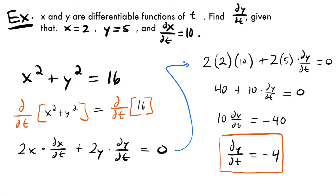That is the rate at which y is changing with respect to t in this scenario. This is the simplest form of a related rates problem. Most of the time when you see a related rates problem, you're going to be given a word problem, which is the rest of the examples we look at in this video.